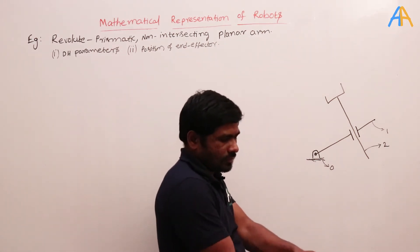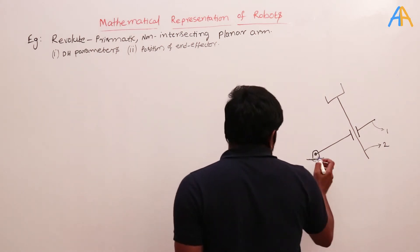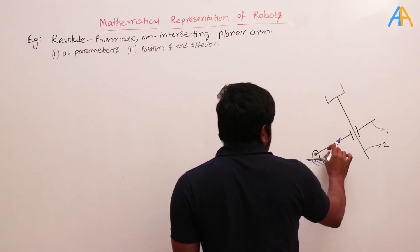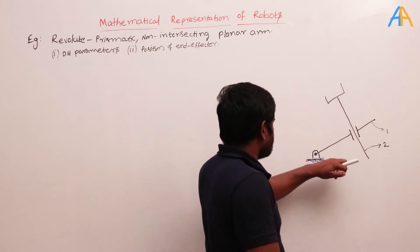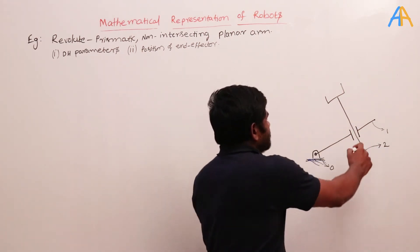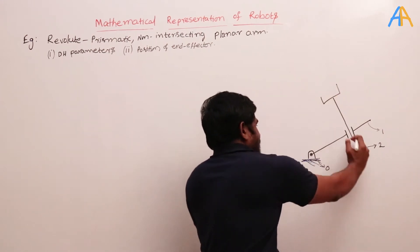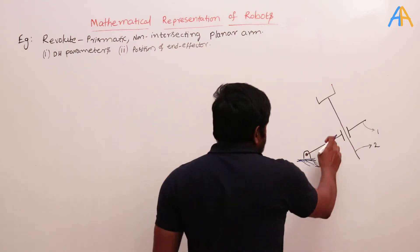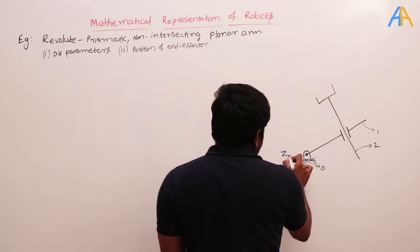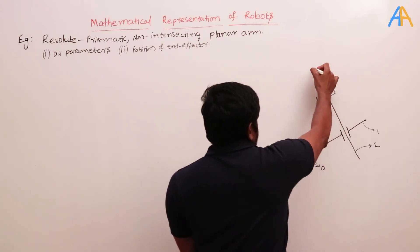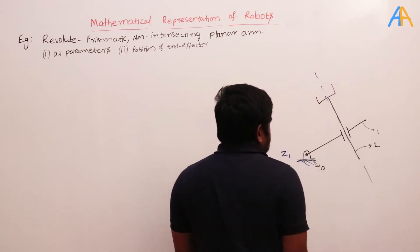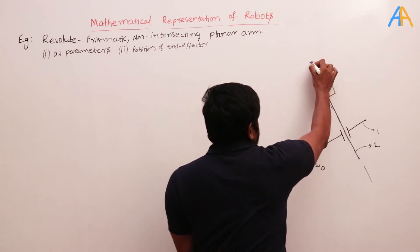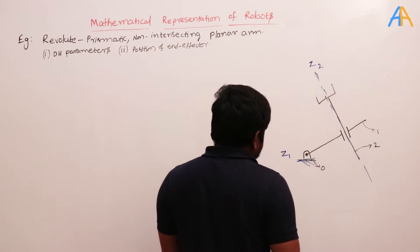This is link one connected to a fixed joint via a revolute joint, and this is link two, which is a translating link. In this case, the links are perpendicular. Along link one we get z1, and along joint two we get z2. So we have identified z1 and z2.